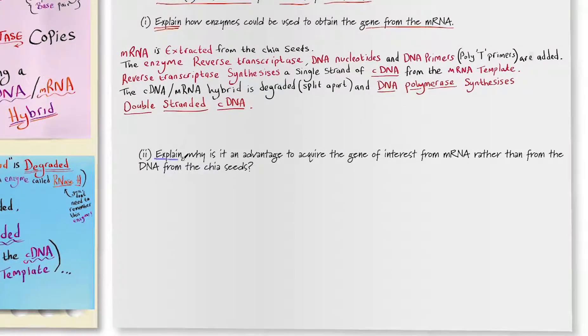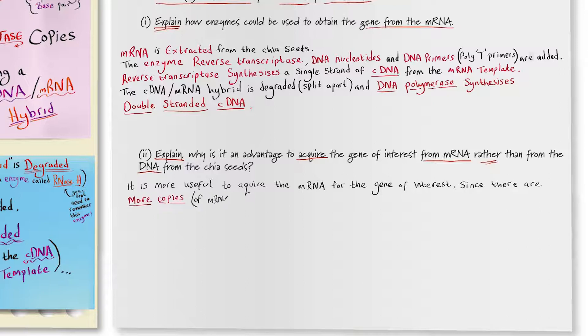And finally they want you to explain why it is an advantage to acquire the gene of interest from messenger RNA rather than from DNA from the chia seeds. They want to know that it is more useful to acquire the messenger RNA for the gene of interest since there are more copies of messenger RNA available. Also the messenger RNA only codes for the protein we are interested in since the gene has been transcribed from DNA.